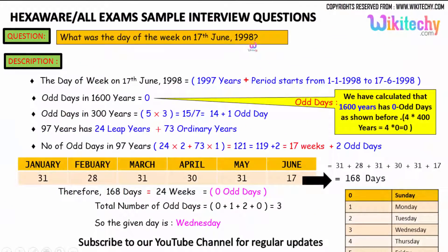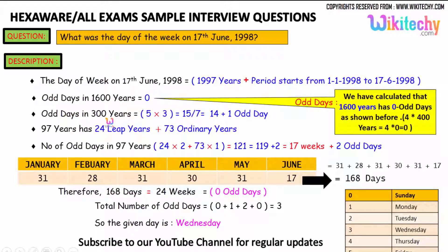We need to identify the day for 17th June 1998. The day of the week on 17th June 1998 involves calculating 1997 years plus the period from January 1st 1998 to 17th June 1998. Odd days in 1600 years is 0. For 300 years: 1900 = 1600 + 300, and 300 years gives 5 × 3 = 15, divided by 7, that's 1 odd day.